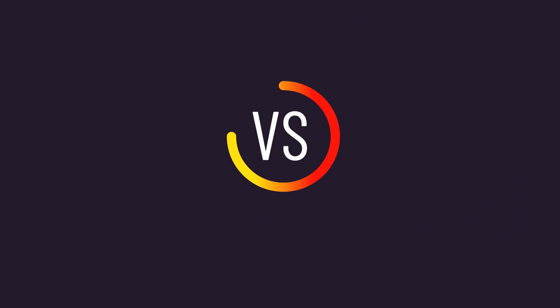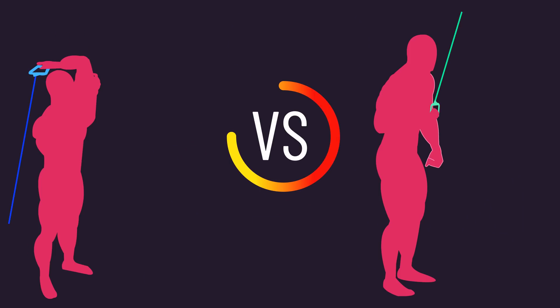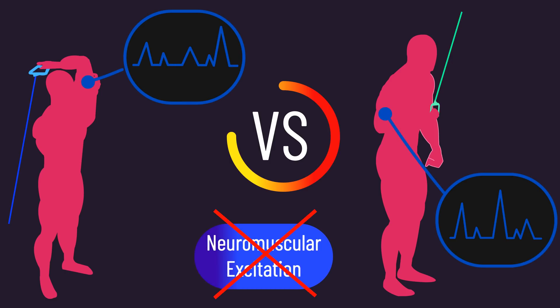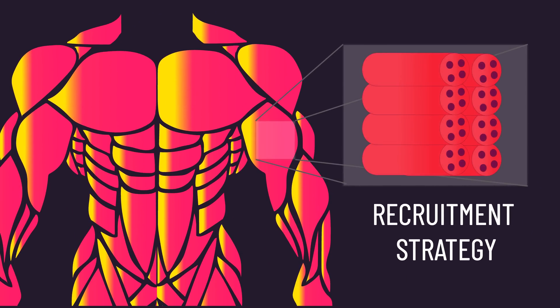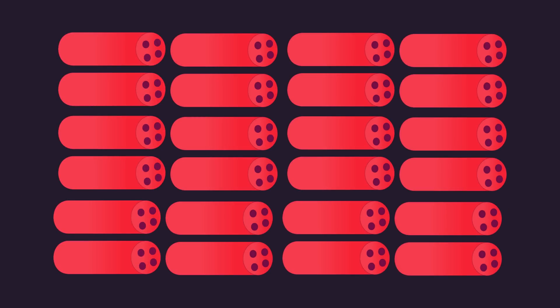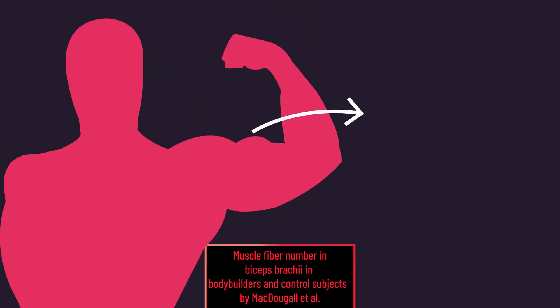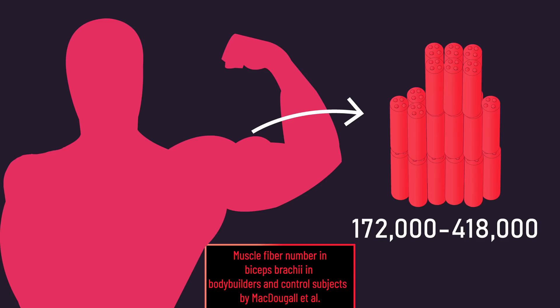This matters as if we're comparing EMG recordings between exercises training a muscle at subtly different angles, we can get different EMG recordings unrelated to actual neuromuscular excitation differences. A muscle's recruitment strategy can also influence the EMG recordings independent of actual neuromuscular excitation changes. Remember, muscles contain many, many fibers. As a fun fact, it's estimated the mere biceps contains anywhere from 172,000 to 418,000 muscle fibers.